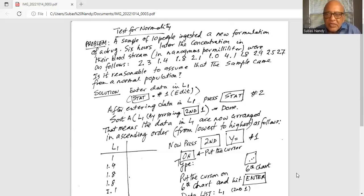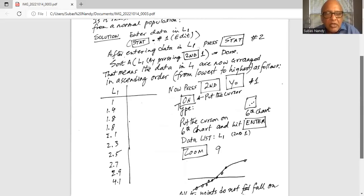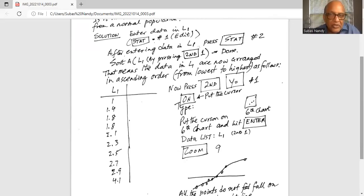That means the data set in L1 has been arranged in ascending order like I show here from the lowest to the highest. You can press the stat button and then number one to make sure that the data is arranged in the ascending order from lowest to the highest. Now we need to check out whether this data came from a normal population. So we would like to do a quantile plot and TI-84 has a built-in function to do that.